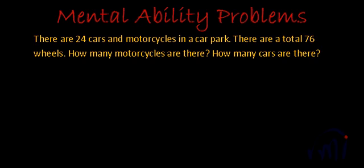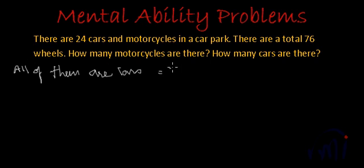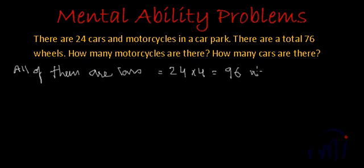If all 24 of them are cars, how many wheels will there be altogether? If all of them are cars, there will be 24 multiplied by 4. That gives us 96 wheels.